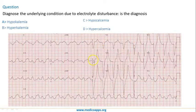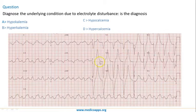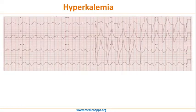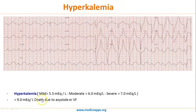The second characteristic feature is a peaked T wave. If you see the PQRS complex, there is a peaked T wave. Both these findings — bizarre fused QRS complexes and peaked T waves — point towards the diagnosis of hyperkalemia. Values greater than 5.5 are mild, greater than 6 moderate, greater than 7 severe, and greater than 9 invariably leads to death due to asystole and ventricular fibrillation.